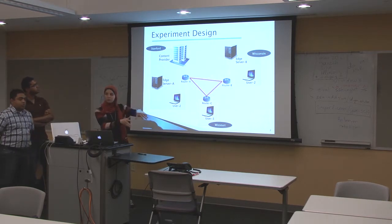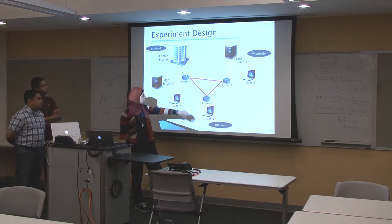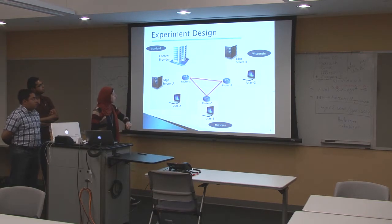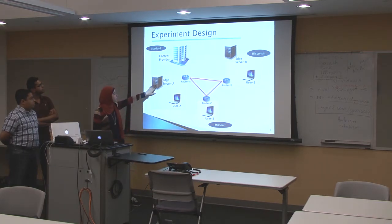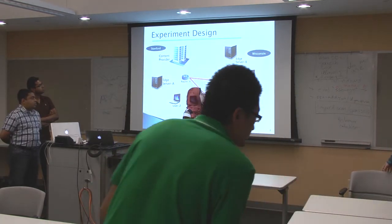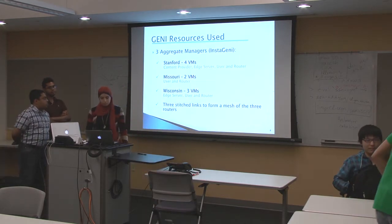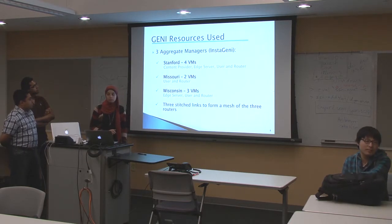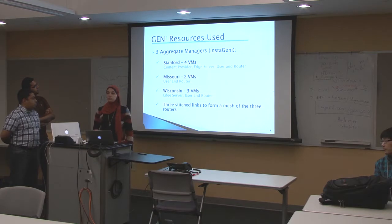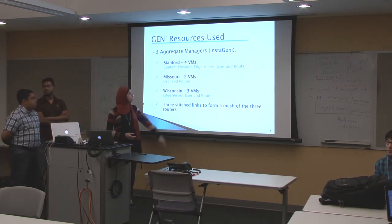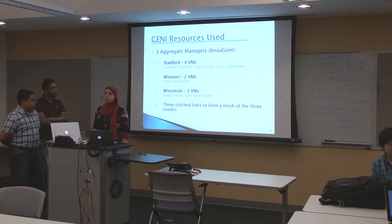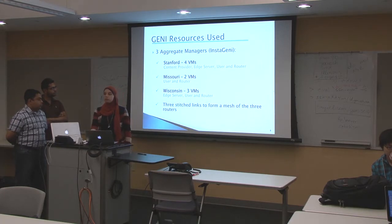From the simple topology, we switched to one with three aggregate managers: one at Wisconsin, one at Missouri, and one at Stanford, with stitched links between all three AMs. At Stanford, we have our content provider, edge server A, and a user in the same subnet. At Missouri, we have just a user. At Wisconsin, we have the second edge server and another user. Our experiment uses GENI resources — three aggregate managers from Stanford, Missouri, and Wisconsin. We used VMs for all resources: four VMs at Stanford for content provider, edge server, user, and router, and similarly for Missouri and Wisconsin. We have three stitched links between the AMs to form a mesh so the routers can communicate.